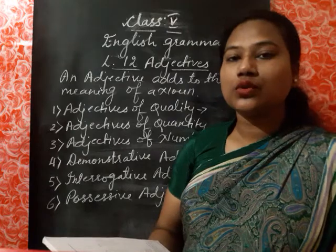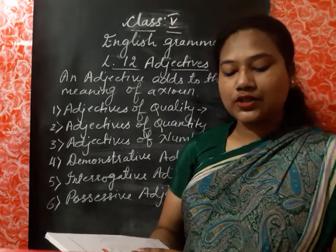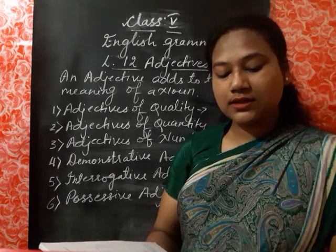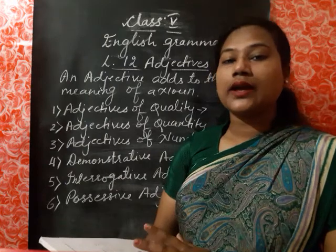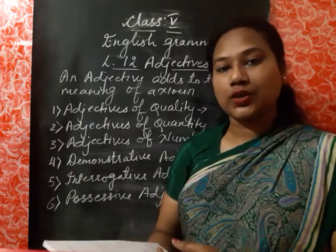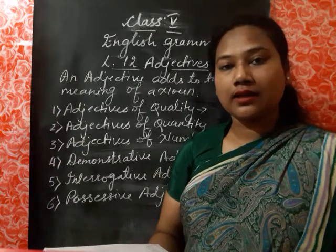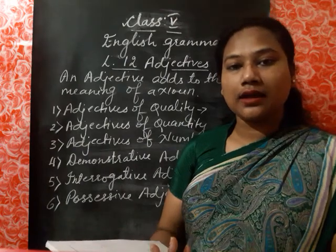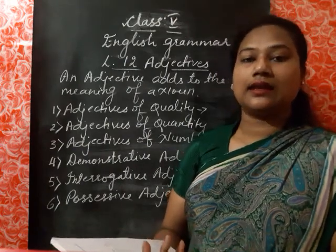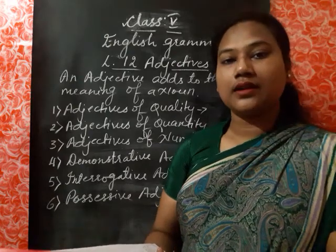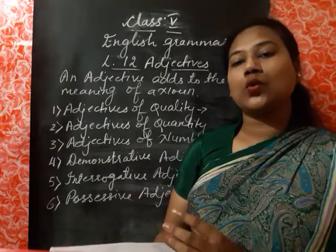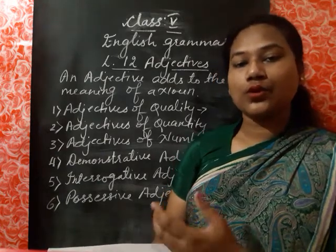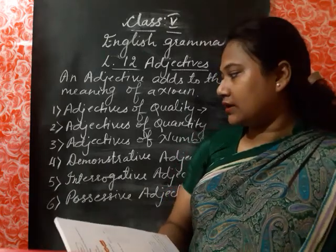The next one is adjectives of quantity. An adjective of quantity tells us how much of something is spoken about. It answers the question 'how much?' — how much quantity of a noun there is. Examples include words like some, little, enough, and few — these tell us the quantity.